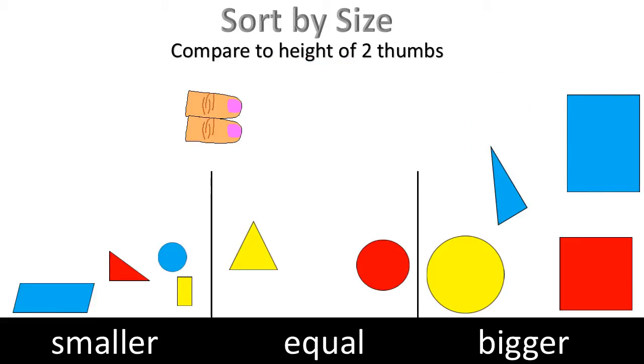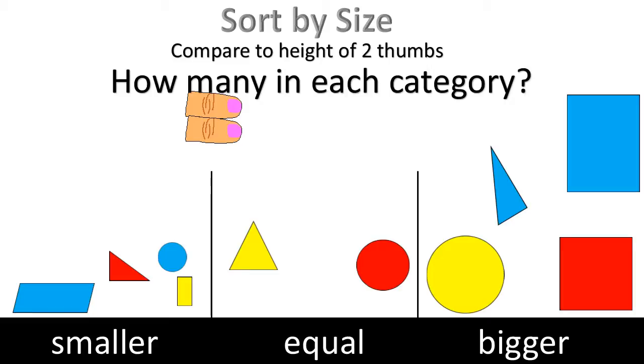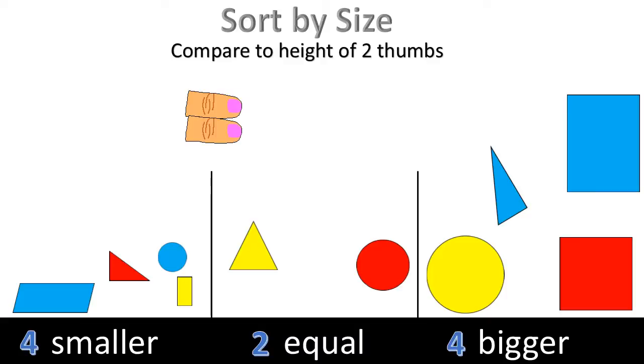How many in each category? Four. Two. Four. How many more are bigger than equal? Two.